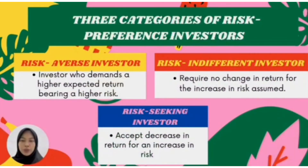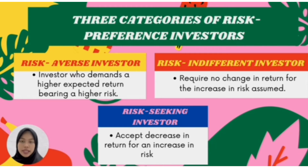Now we move to three categories of risk preference investors. First is the risk-averse investor, who demands a higher expected return for bearing a higher risk. Second, the risk-indifferent investor requires no change in return for an increase in risk assumed. Lastly, the risk-seeking investor accepts a decrease in return for an increase in risk.